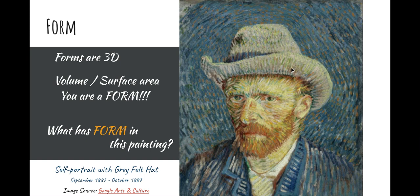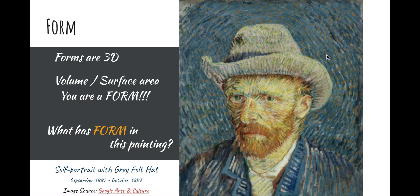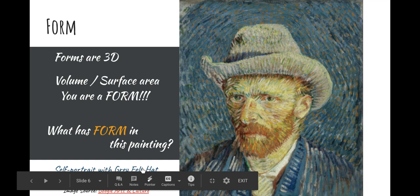Next up is form. Form is three-dimensional, or 3D. Form has volume and surface area. So essentially, you are a form — you are three-dimensional. And then there's a question here: what is form in this painting? So we have shapes, and then we have form. We'll get more into that in a second.